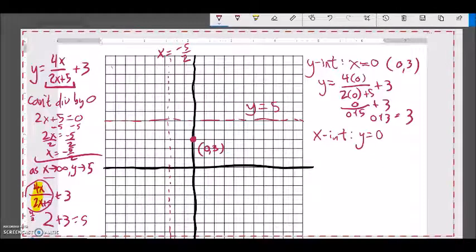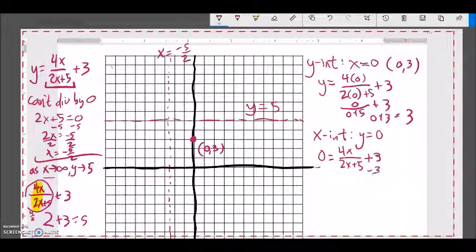So let's solve that, I'm going to let y be 0, so going back to my equation, y is 0, and I'm solving for x. 4x over 2x plus 5, plus 3. All right, I'm working to get x all alone. So first thing I'm going to do is deal with this plus 3, so I'm going to subtract 3 from both sides of the equation. So I get negative 3 equals 4x divided by 2x plus 5.